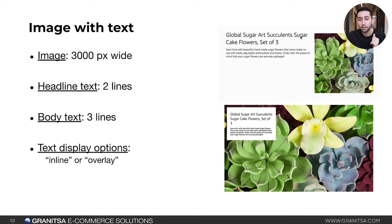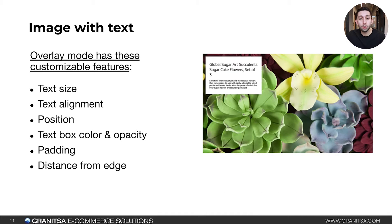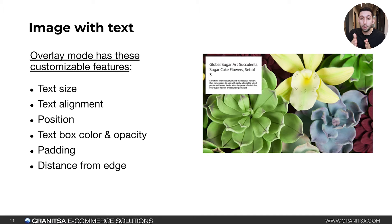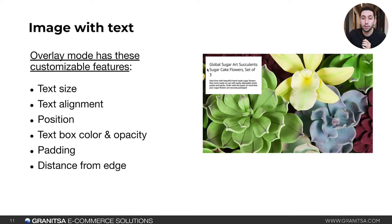The inline option places text beside the image, while overlay places it on top. The overlay mode has customizable features: you can change the text size, text alignment (left, center, or right), the position on the image such as top left or other corners, the text box color and opacity (white box with black text, black box with white text, or transparent background), padding, and the distance from the edge of the screen.